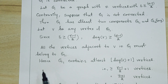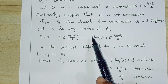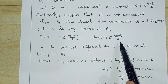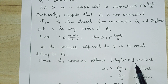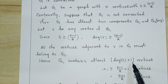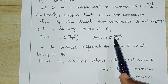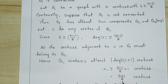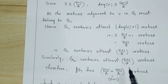Therefore G1 contains v itself plus all vertices adjacent to v, which number at least (n−1)/2. So G1 contains at least deg(v) + 1 vertices. Substituting deg(v) ≥ (n−1)/2, we get G1 contains at least (n−1)/2 + 1 = (n+1)/2 vertices. By a similar argument, G2 also contains at least (n+1)/2 vertices.